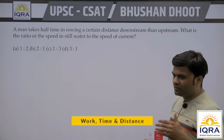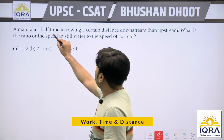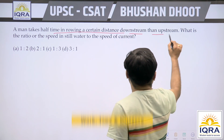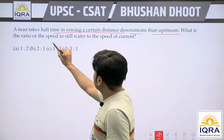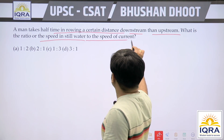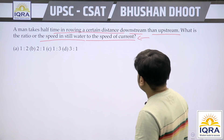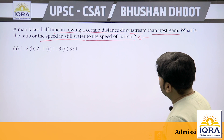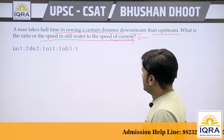So we'll start with an example. A man takes half the time rowing a certain distance downstream than upstream. What is the ratio of the speed in still water to the speed of the current?